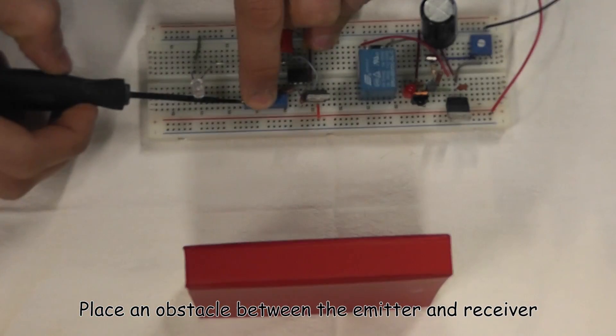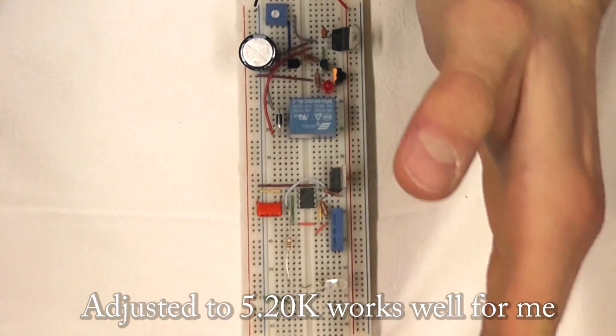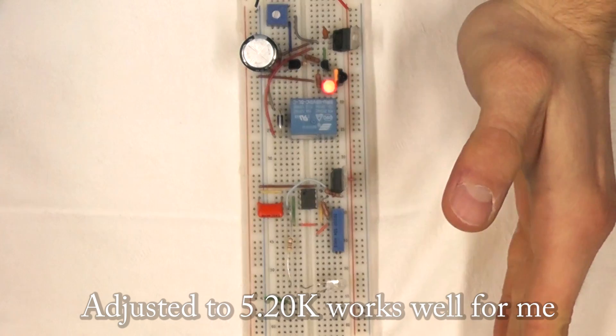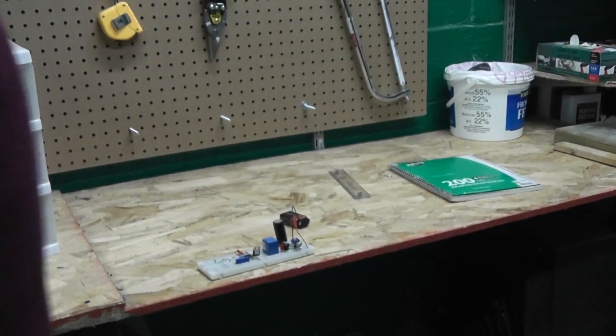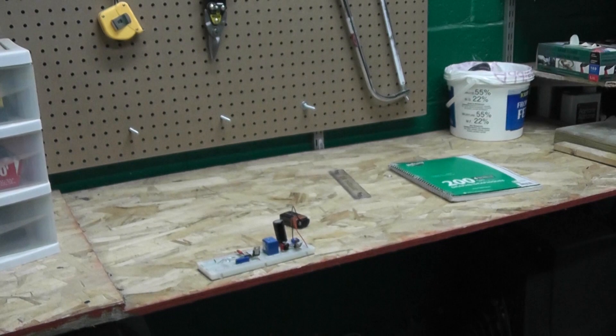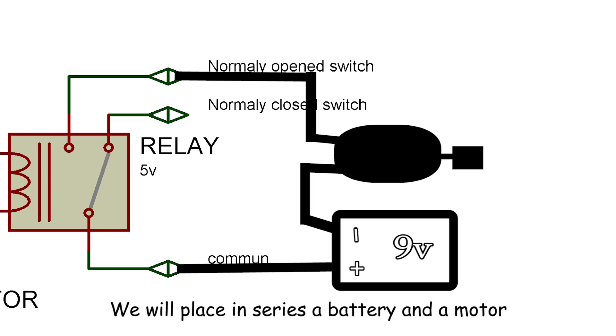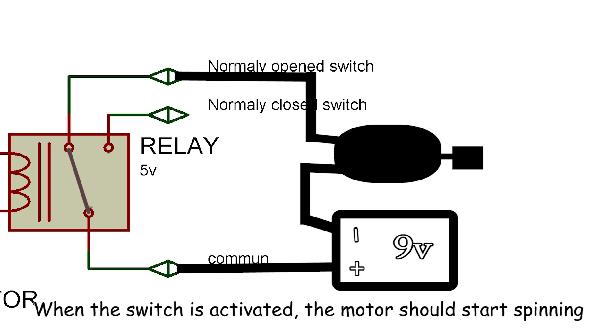To do this, place an obstacle between the emitter and the receiver. The adjustment may take a while so be patient. Now let's use the relay to power on another circuit. We will place in series a battery and a motor. When the switch is activated the motor should start spinning.